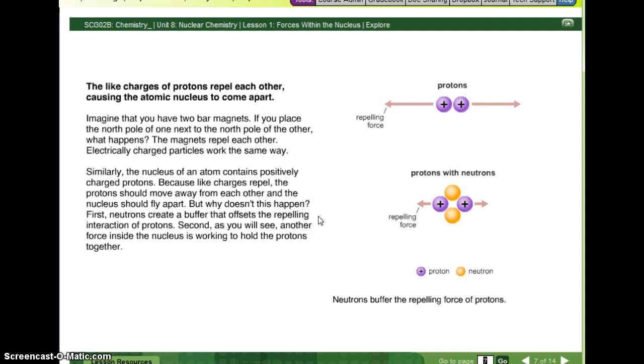First, neutrons create a buffer that offset the repelling interactions of protons. So, it's not just protons, but there's neutrons. So, the protons are like, okay, I still don't want to be by you, but not as bad as when it was just us by ourselves. Second, as you will see, another force inside the nucleus is working to hold the protons together.